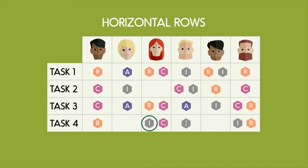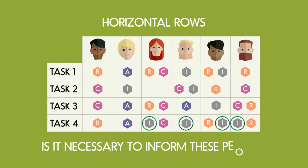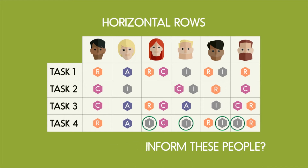Similarly, if there are lots of Is on the horizontal, are too many people being informed? Is this necessary? Do they even want to be informed?